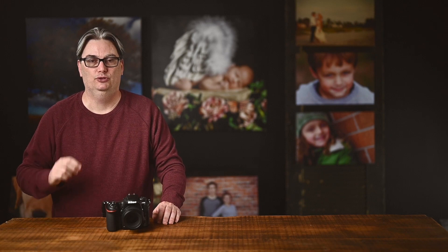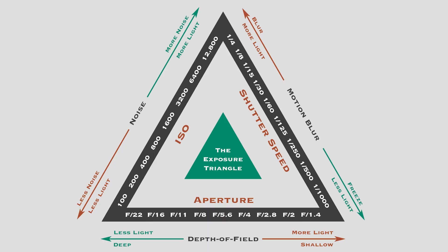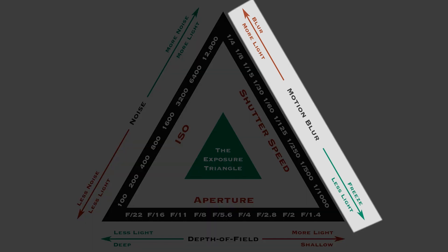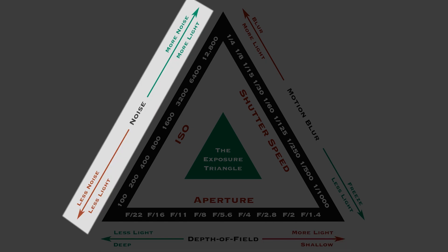In photography there is something known as the exposure triangle, and it explains the relationship between your different camera settings with a visual tool. Here is a typical exposure triangle, and on each side you have one camera setting with information about how each affects your exposure — whether it freezes or blurs the action, the depth of field, and possible digital noise.